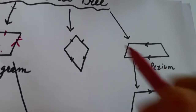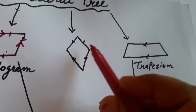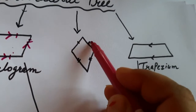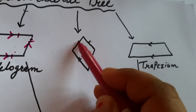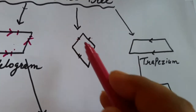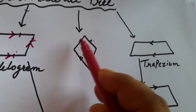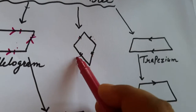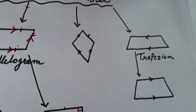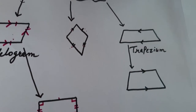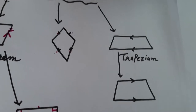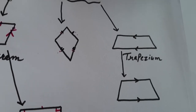Next is the kite. In a kite, two pairs of adjacent sides are equal — these two sides are equal and these two sides are equal. Only this property holds in a kite.